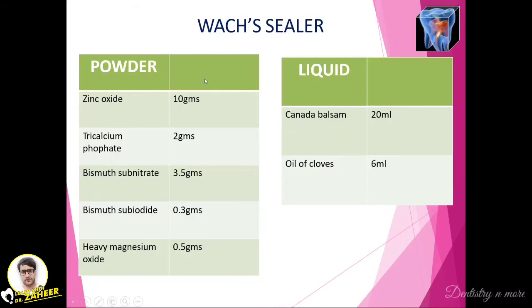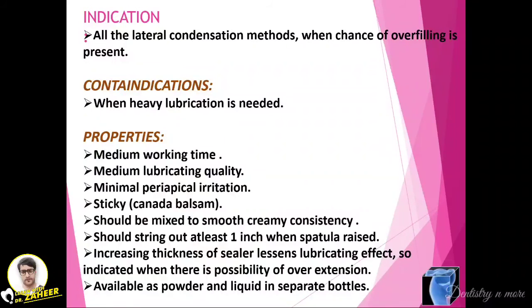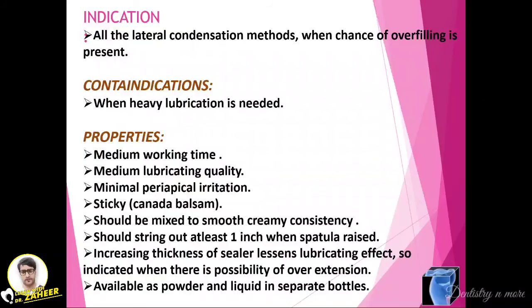The second ZOE sealer is the wax sealer, which also has powder and liquid components. The powder contains zinc oxide, tricalcium phosphate, bismuth subnitrate, bismuth subiodide, and heavy magnesium oxide in amounts of 10, 3.5, 0.3, and 0.5 grams. The liquid consists of Canada balsam and oil of cloves at 20 ml and 6 ml respectively. It is indicated in all lateral condensation methods when the chance of overfilling is present. It is contraindicated when heavy lubrication is needed. Properties include medium working time, medium lubricating quality, and minimal periapical irritation. It should be mixed to a smooth, creamy consistency that strings out at least one inch when the spatula is raised.